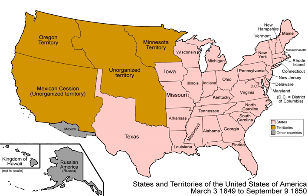Texas gave up much of the Western land it claimed and received compensation of $10 million to pay off its national debt. Clay was still given much of the credit for success. It quieted the controversy between Northerners and Southerners over the expansion of slavery and delayed secession and civil war for another decade. Senator Henry S. Foote of Mississippi later said, had there been one such man in the Congress of the United States as Henry Clay in 1860–61, there would, I feel sure, have been no civil war.